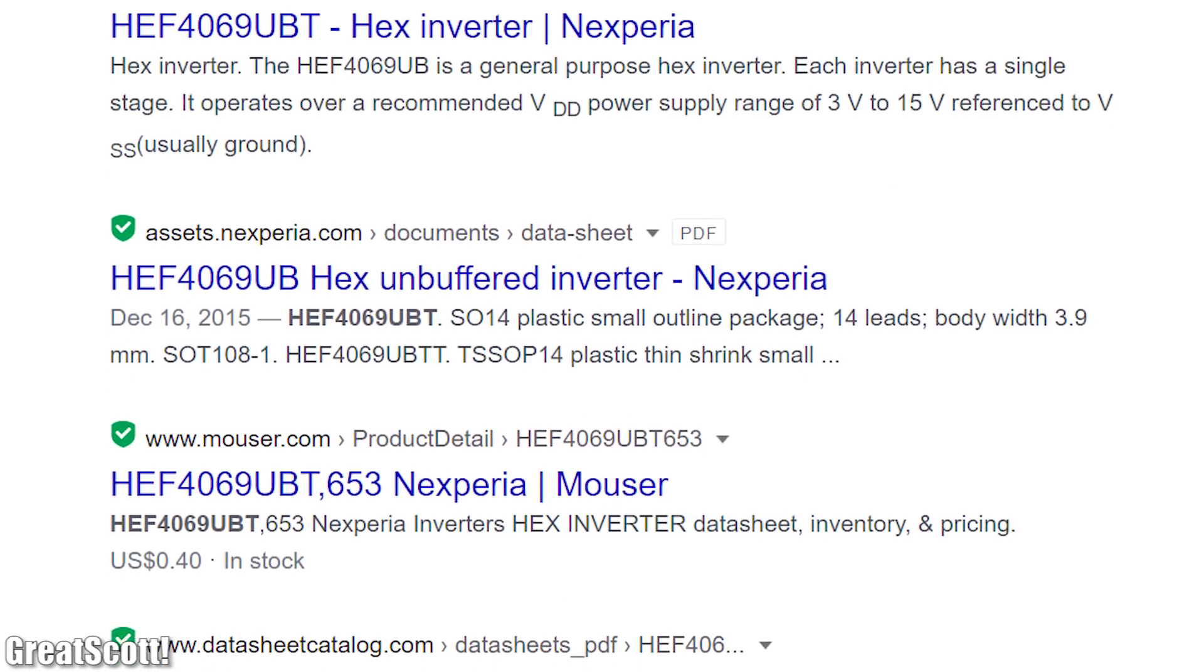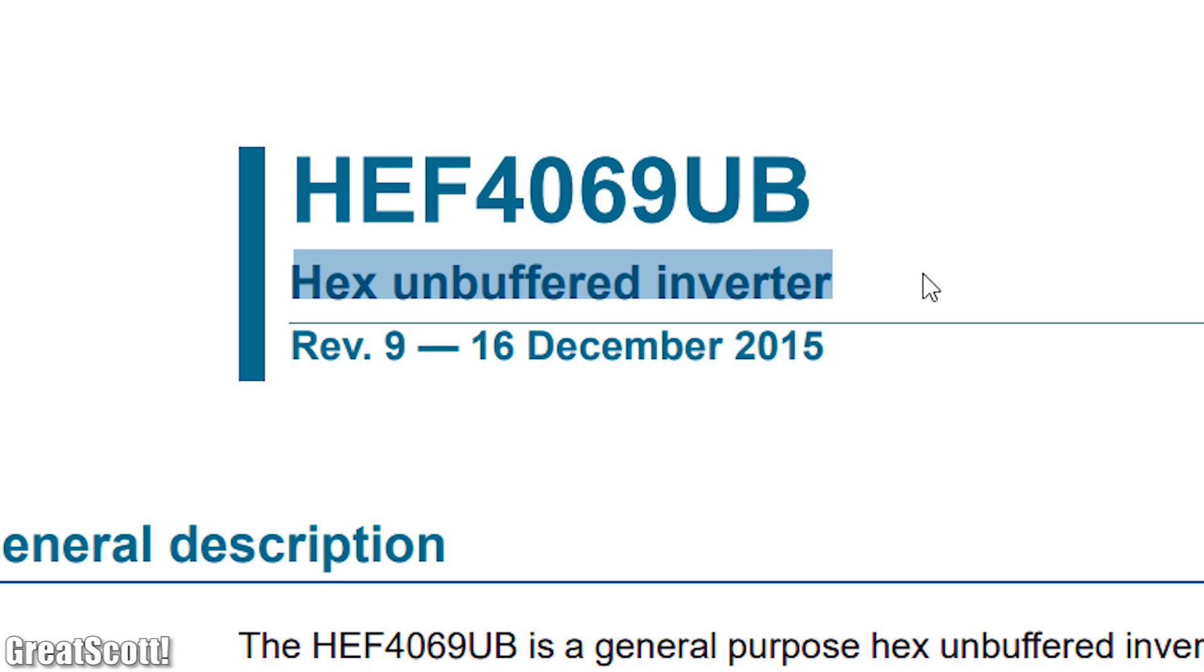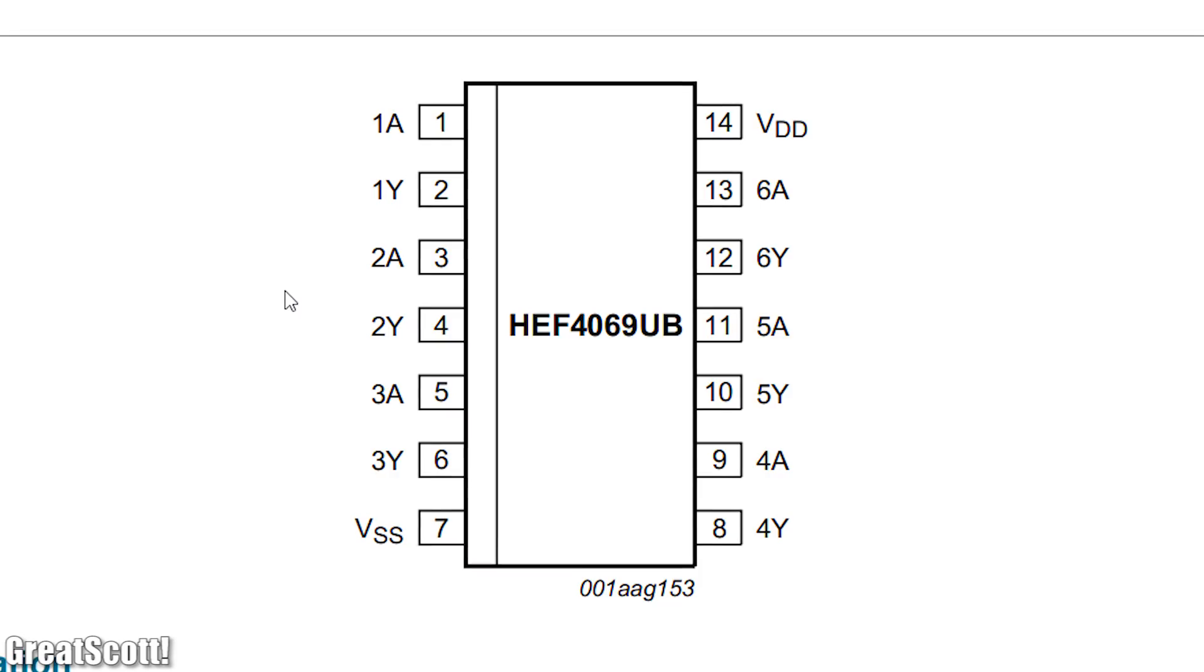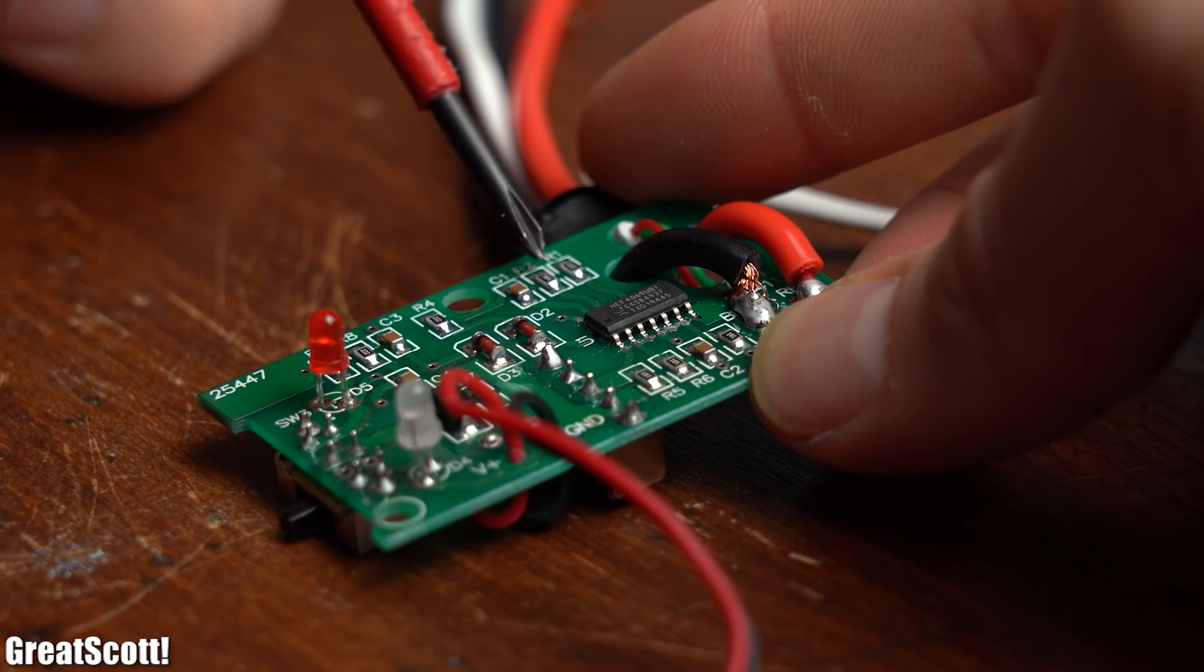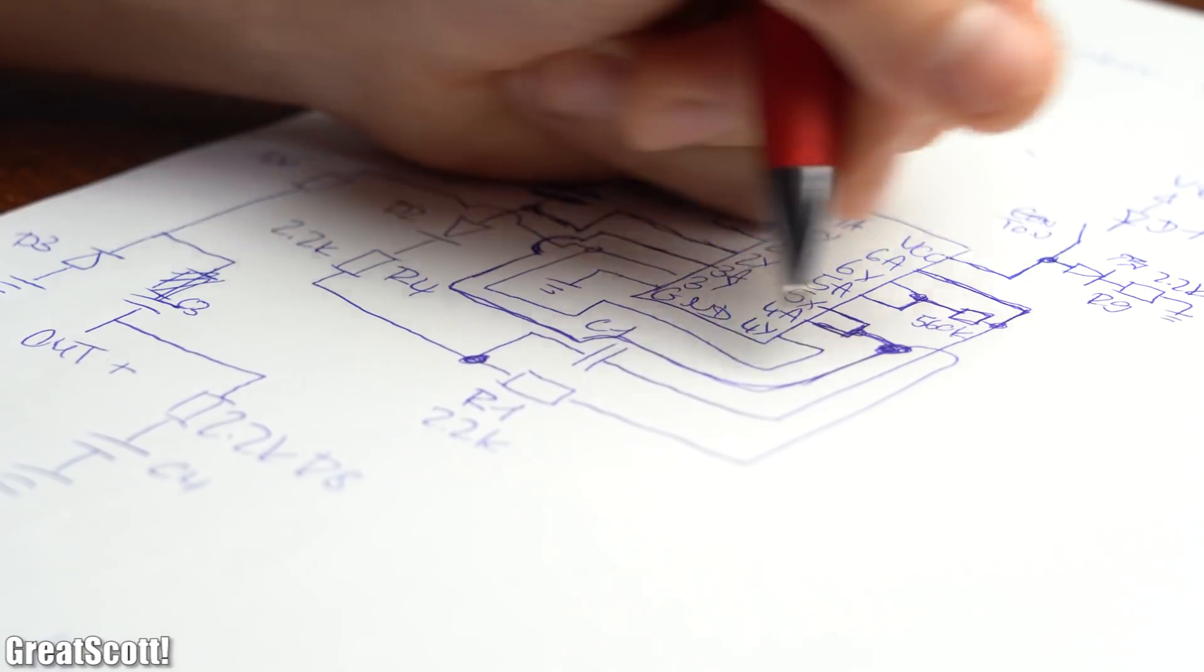So I firstly googled the name of the IC in order to not only find out that it is a hex inverter IC, but also that it comes with this pinout. Next I followed the traces leading from and to the IC in order to create a crude schematic of what we are working with.